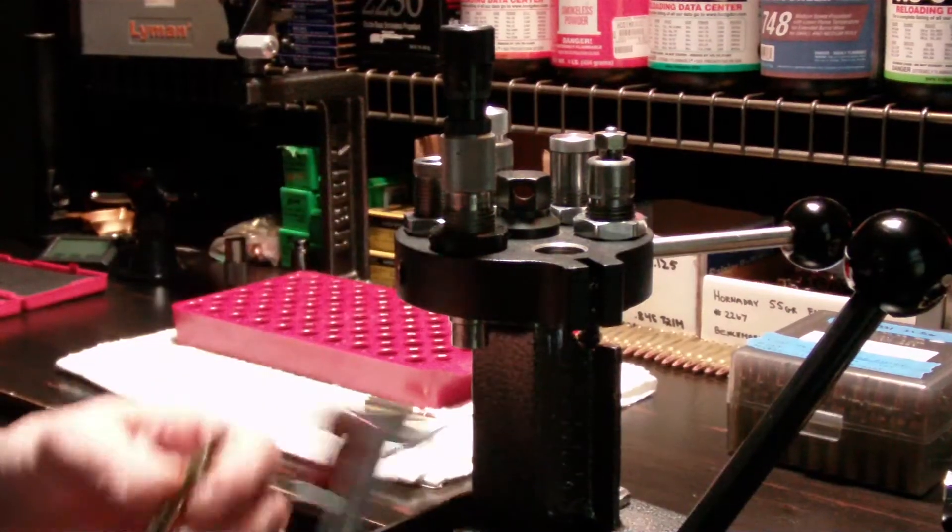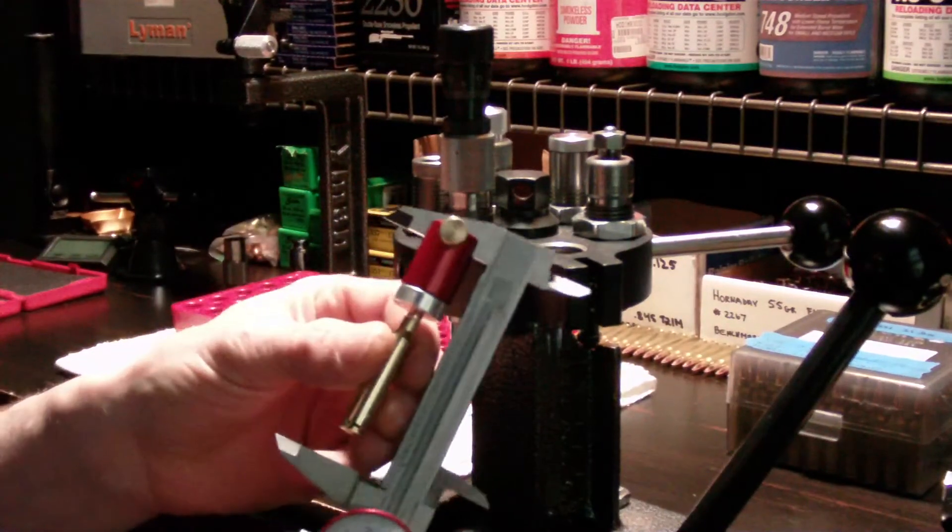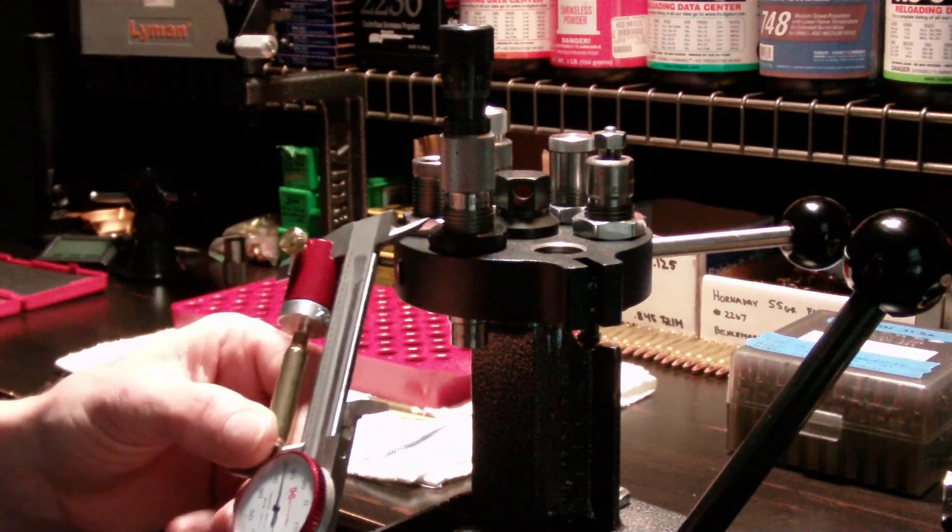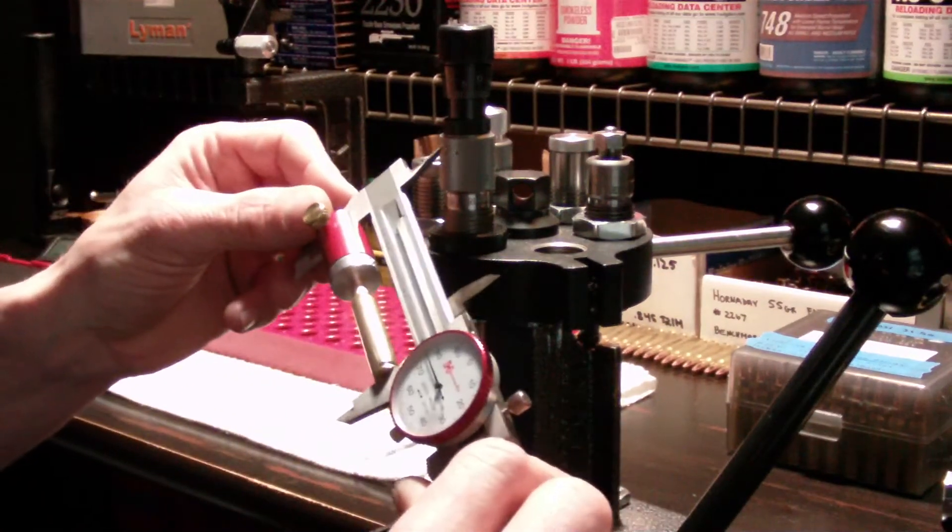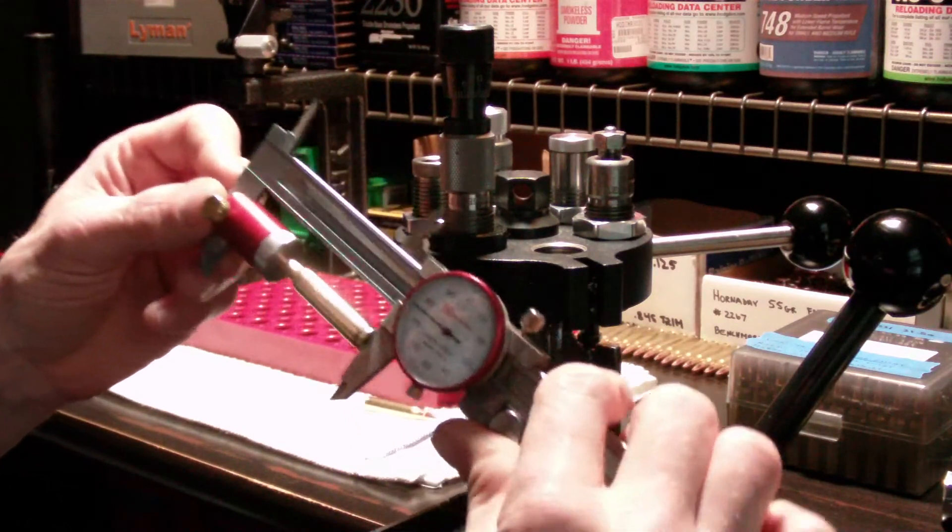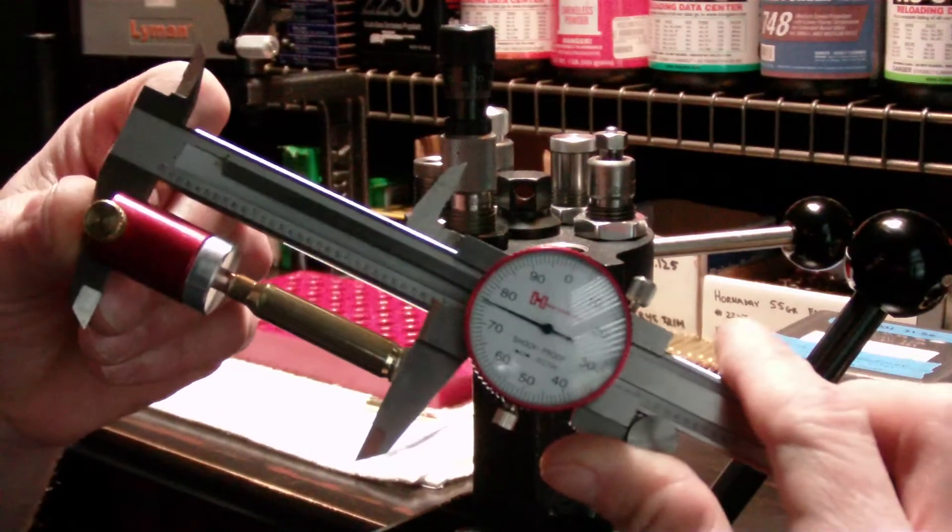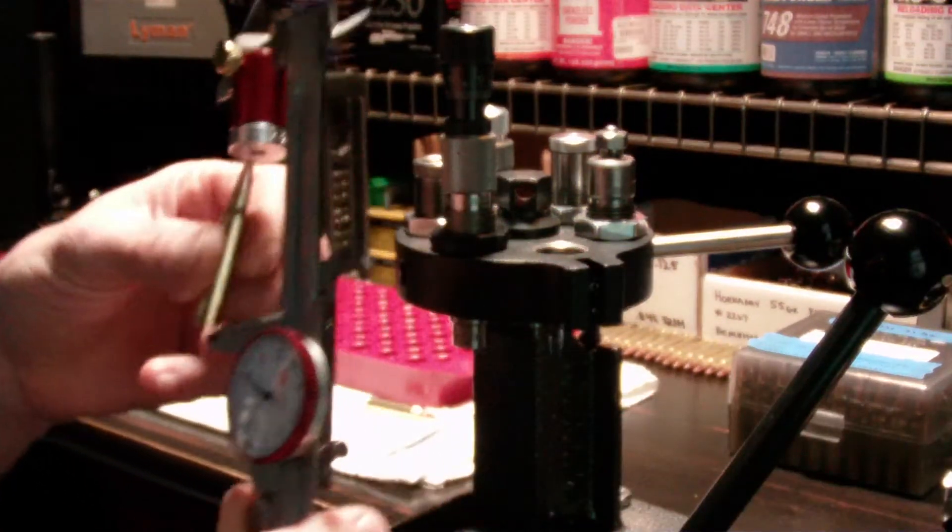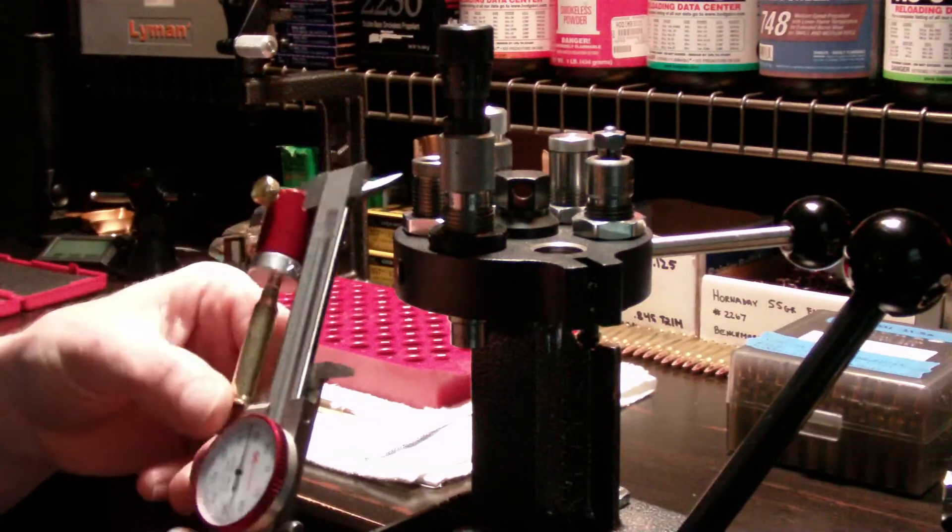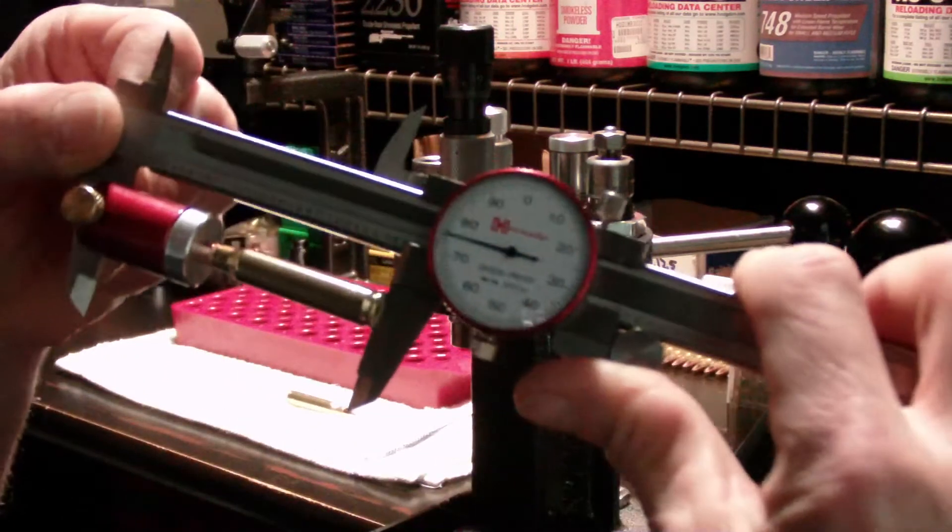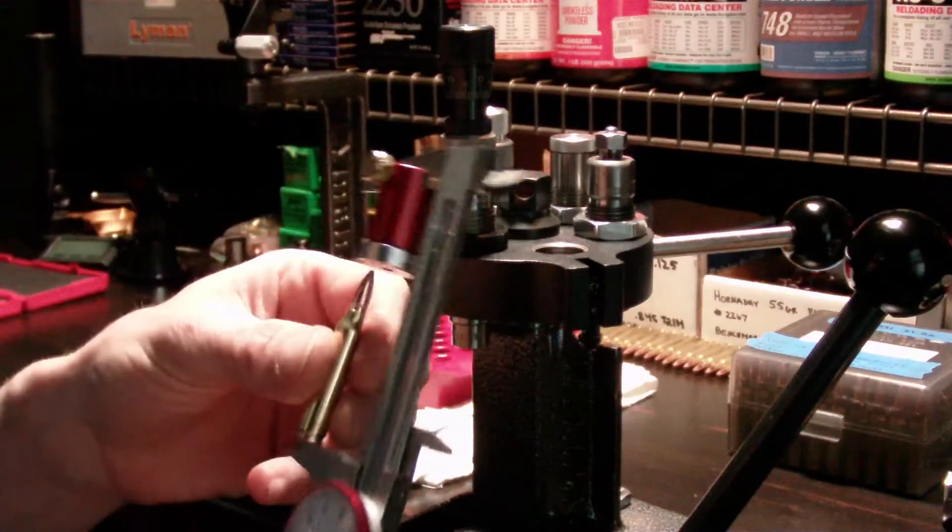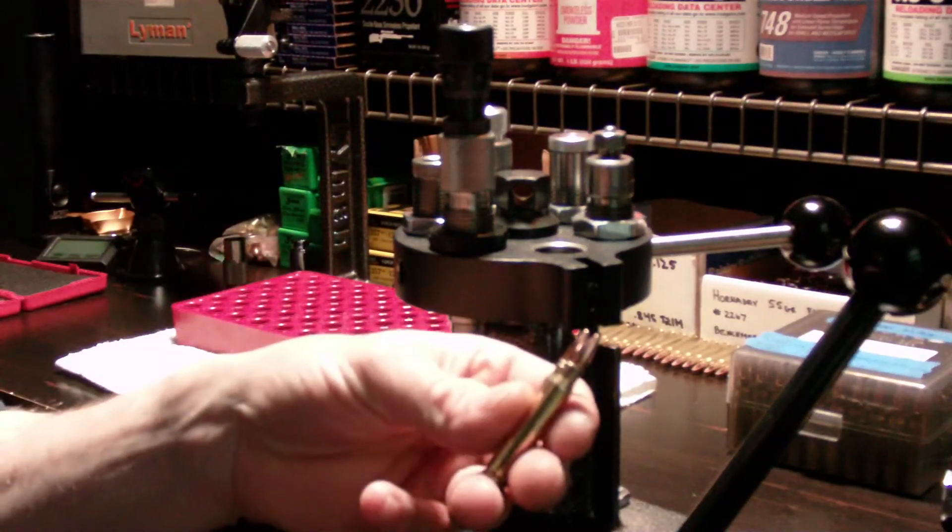So when you use a comparator which measures the ogive, this one here is going to measure in at 2.875, which is pretty much where I want all mine at. And this one here is also 2.875. So it was three thousandths difference in overall lengths, but when you measure from the ogive to the base they're exactly the same.